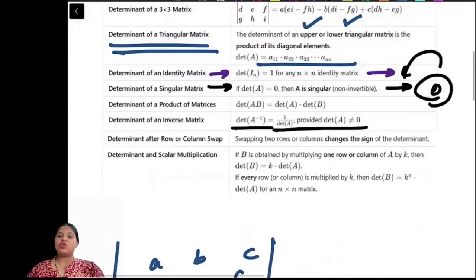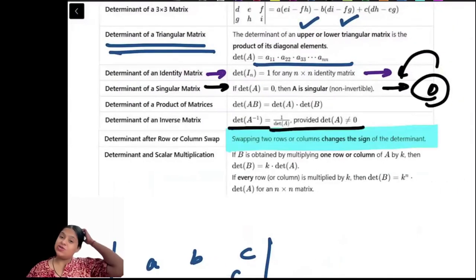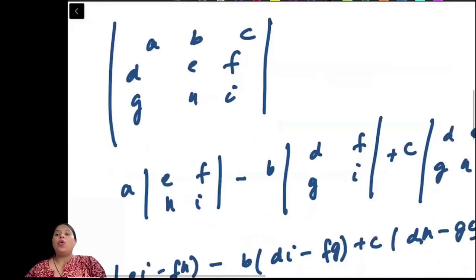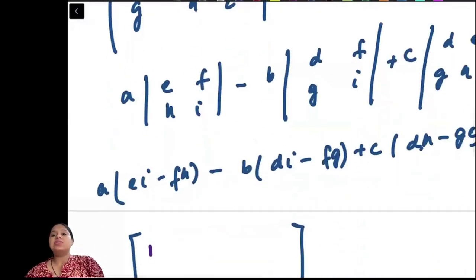If we swap any row or column, the sign of the determinant changes. What does this basically mean?